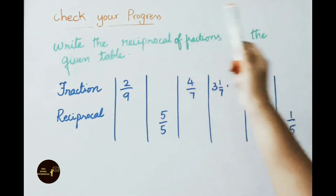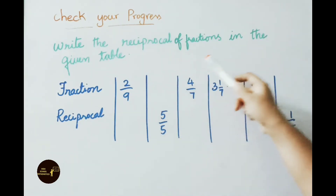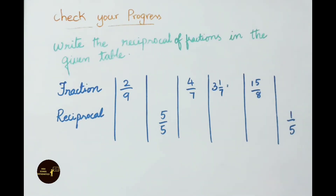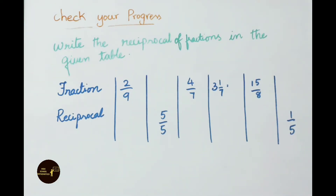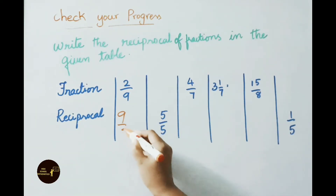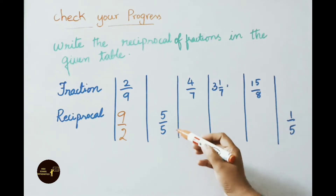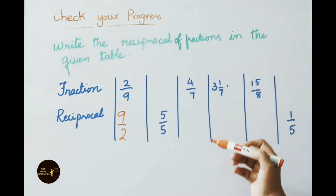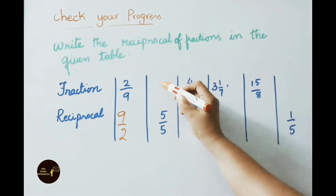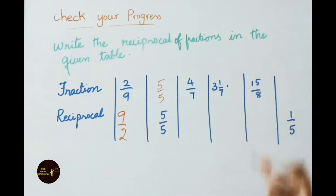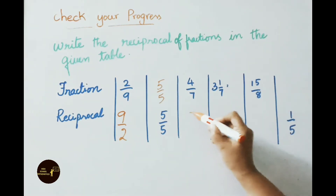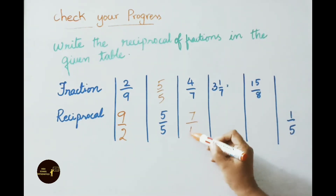See now check your progress — write the reciprocal of fractions in the given table. See the fraction 2/9: reciprocal is 9/2. See next, when reciprocal is given as 5/5, we have to write the fraction. 5/5 reciprocal is again 5/5 only. See next: 4/7, we have to write reciprocal. 4/7 reciprocally is 7/4.